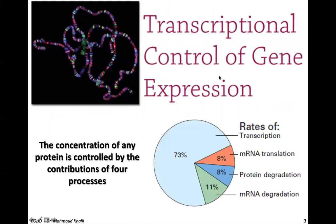For the transcriptional control of gene expression, the concentration of any protein is controlled by the contribution of four processes. As you can see from the pie chart, the major percentage is transcription, which accounts for around 73% of the total processes occurring in the cell. Then we have messenger RNA degradation, protein degradation, and messenger RNA translation.